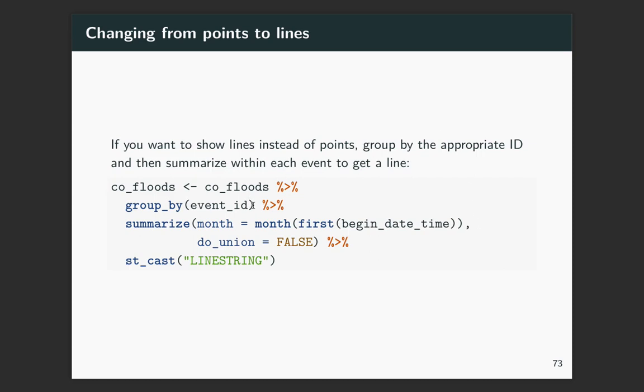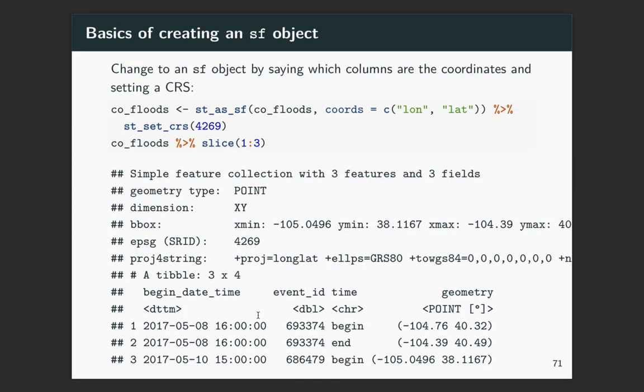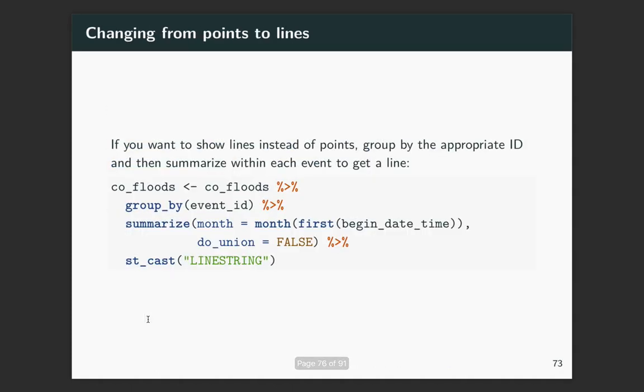In this case, we're going to group by the event ID, and then we're going to use ST_cast to create a line string. The one other thing that I want to do, I want to make sure that we keep the month information so I can still do that by color. So I'm pulling out the month of the first date time for each of these. So this is going to be the, if you look at the data, you can see that we've got the beginning date time, but where we kind of gathered and then spread, we have this repeated for the beginning and the end. So I'm pulling out the month just for the first of those, but it should be the same for both of them. And then I need to do this do_union equals false.